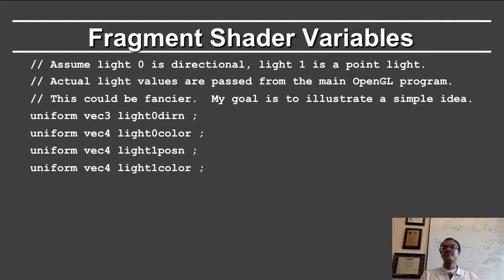We then have the fragment shader variables. In the Mitest sequence of programs, we always assume two lights. Light 0 is directional, light 1 is a point light. The actual light values are passed in from the main OpenGL program. So we have light 0 direction and light 0 color. The color is an RGBA, which is why it's a vec4, whereas the direction is a vec3. Light 1 position in homogeneous coordinates is a vec4, and light 1 color, which is RGBA, is a vec4.